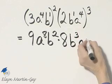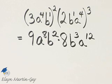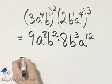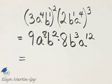And then A, 4 times 3 is 12. And now let's continue to simplify, because we have some like bases here.